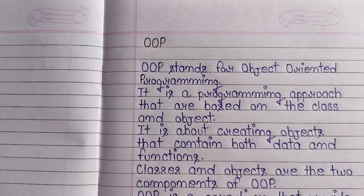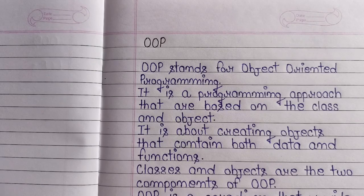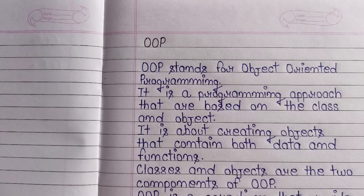इसमें data और code होता है. Data means variable and code means function. इनकी help से हम data को manage करते हैं. OOP objects को create करने पर है जो contain करते हैं data और functions. Classes और objects OOP के दो main component हैं.